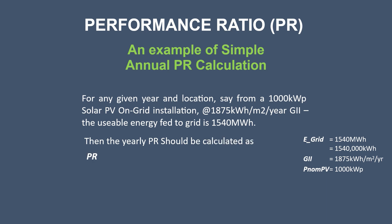Then the yearly PR is calculated as 1,540,000 divided by (1875 multiplied by 1000), which gives 0.82, or 82%. So hopefully you now understand how to calculate the annual performance ratio of a solar plant.